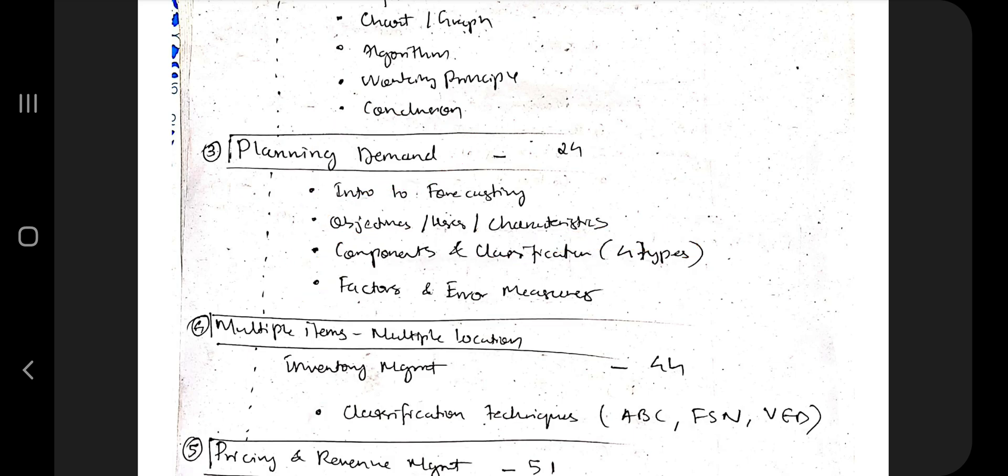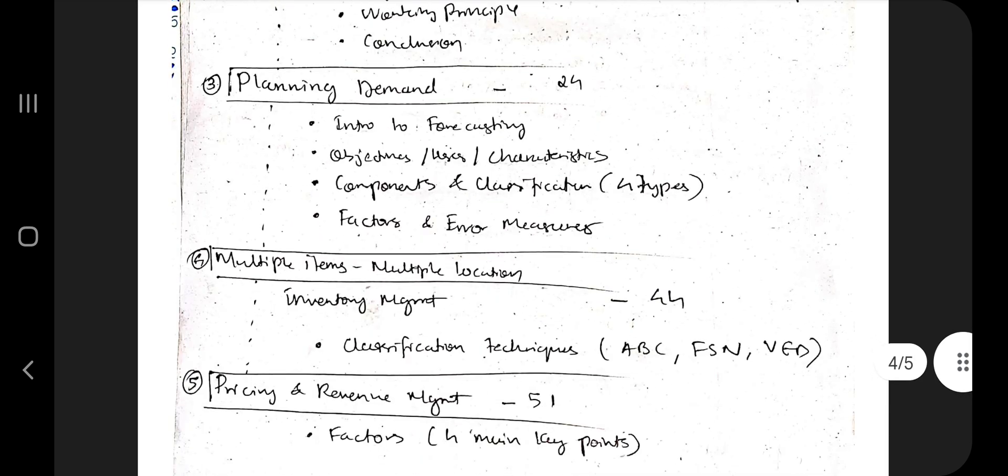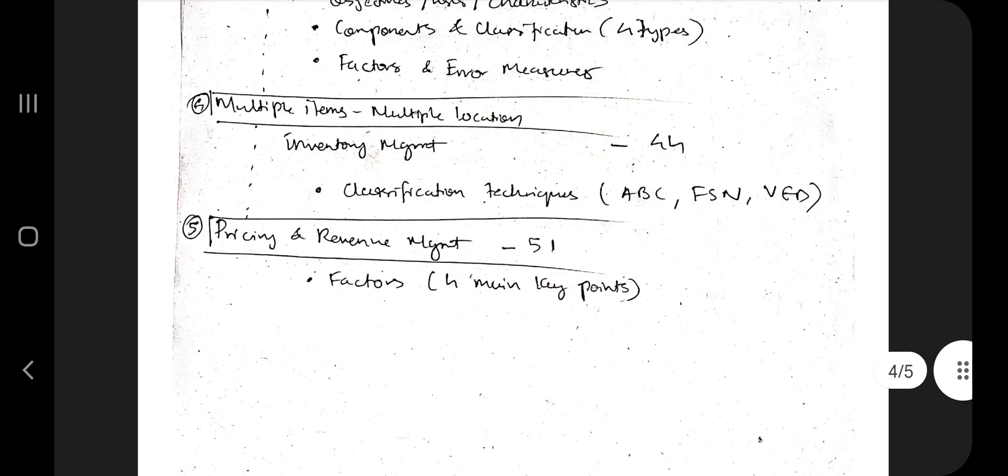And factors and error measures, that's in the third point. The fourth point is the multiple items, multiple location inventory management, the classification techniques - three are there: ABC, FSN, and VED. Last one is pricing and revenue management. Factors are there, four main key points are there.